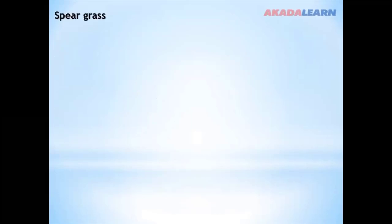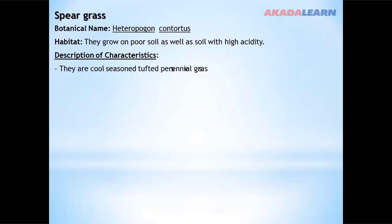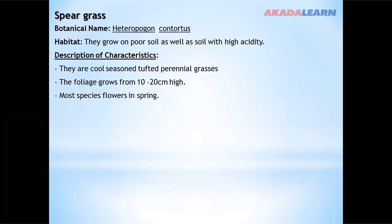Fairgrass, with botanical name Heteropogon contortus, grows in poor soil as well as soil with high acidity. It is a cool-season tufted perennial grass. The foliage grows from 10 to 20 cm high. Most species flower in spring. Its common name is known as day flower.